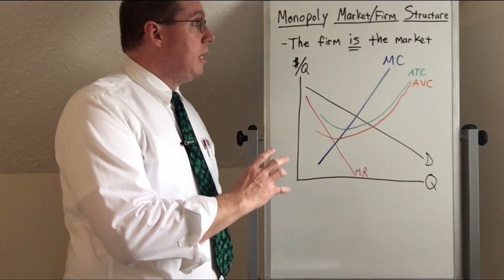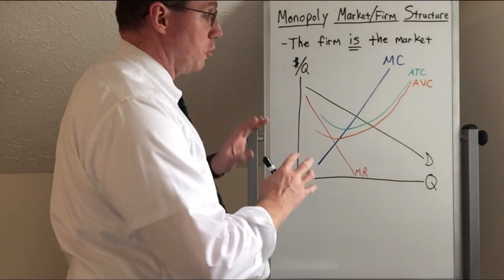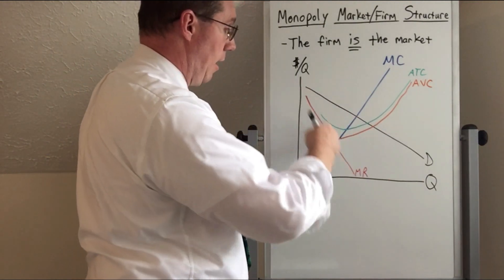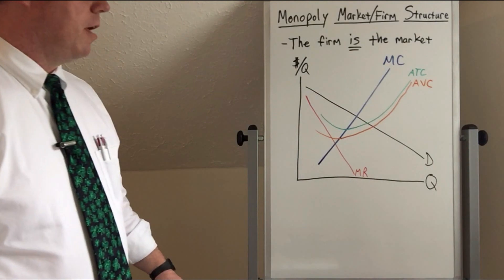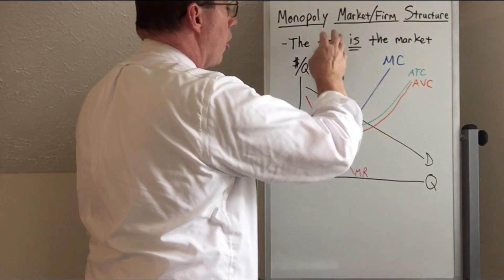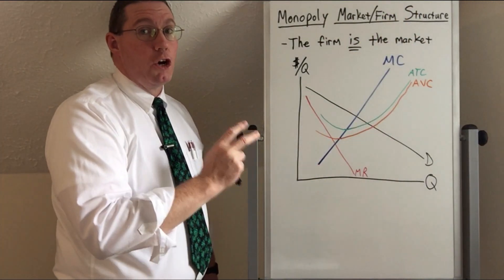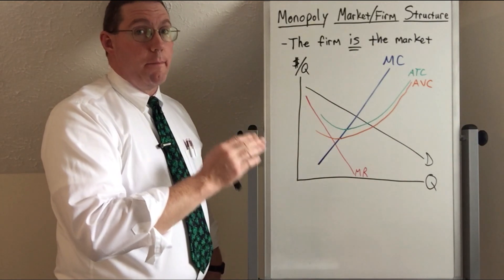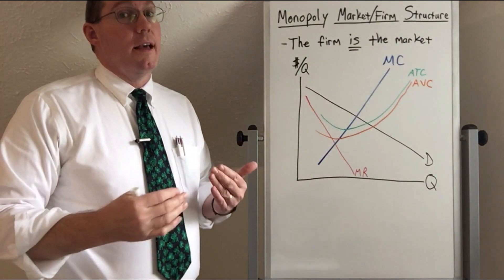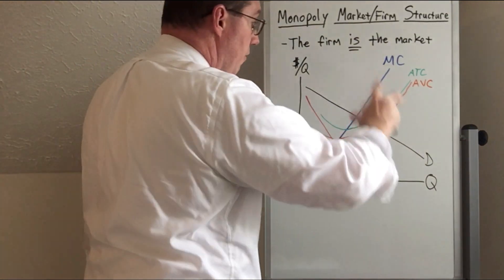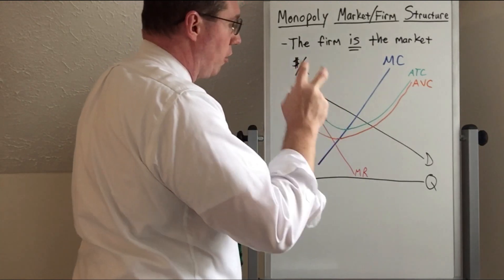Here we are with the monopoly market structure graph. This is what was originally introduced when we first learned about these different curves: the downward sloping demand curve, the downward sloping marginal revenue curve separate from the demand curve, the marginal cost curve, average total cost, and average variable cost. Importantly, this isn't just the market structure graph for monopoly — it is also the firm structure graph. They are exactly the same graph, because the firm is the market in monopoly.